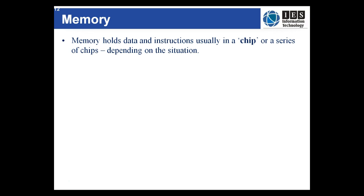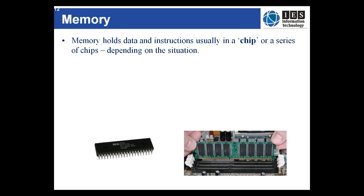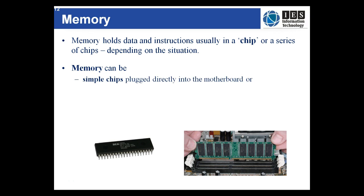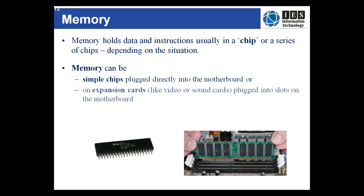Memory holds data and instructions, usually in a chip or a series of chips depending on the capacity of the chip itself. Memory can be single chips plugged in or embedded in the motherboard. It can even be on expansion cards like a video or sound card, and there are even small memory chips inside the CPU itself.